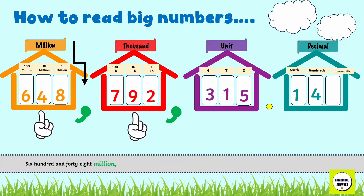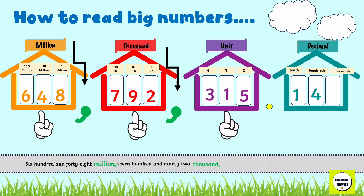Next, go to the thousand house: 792. When you see the comma, say the name of the house — thousand. Then go to the unit house: 315. There is no comma here, so we do not say the name of the house. We are done with the whole numbers.